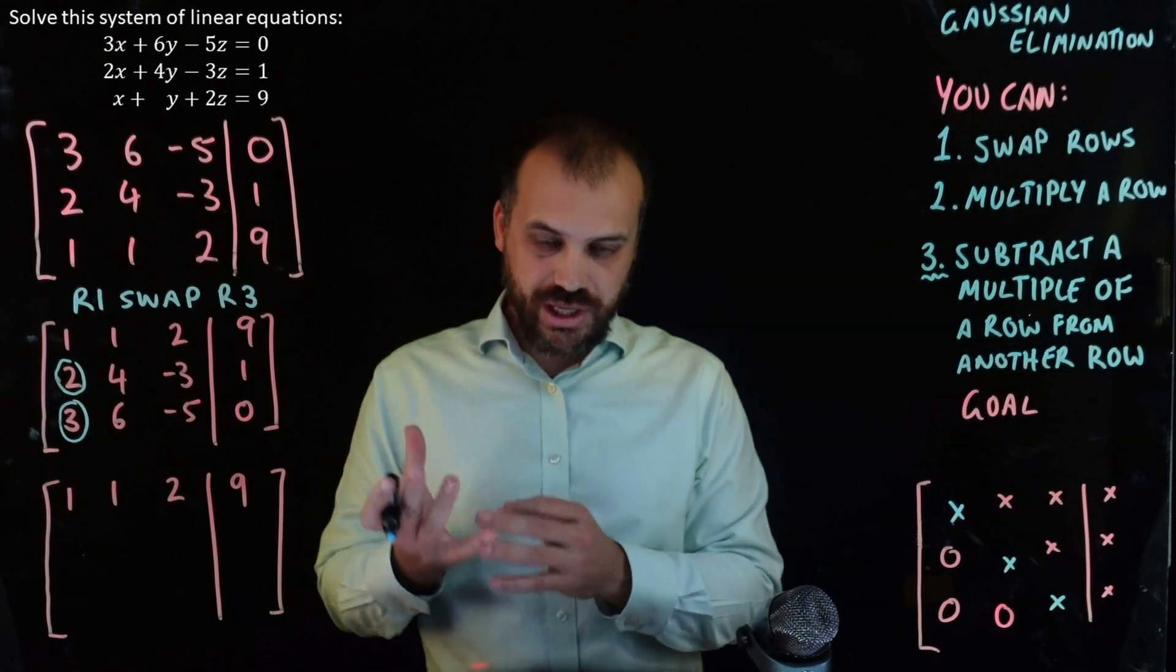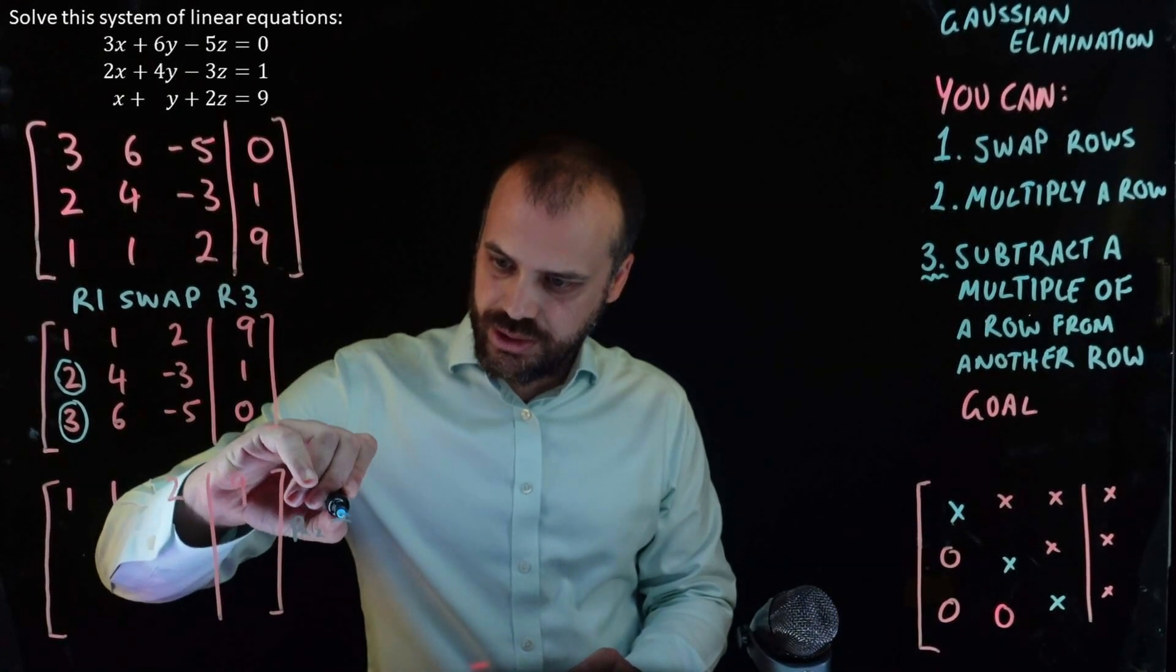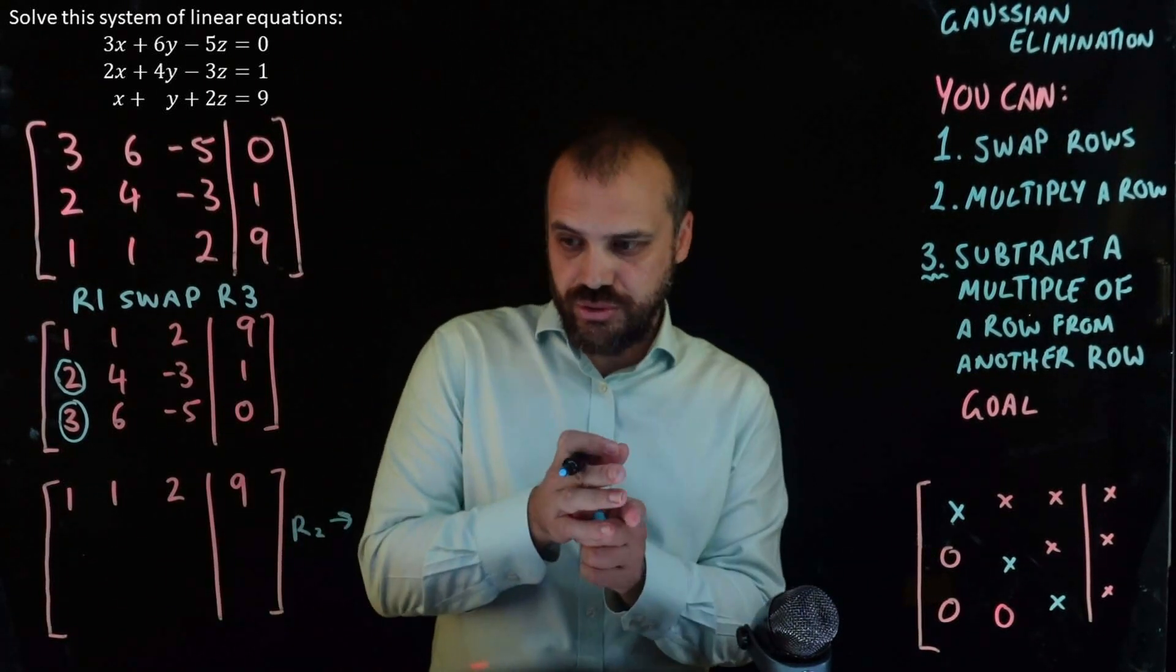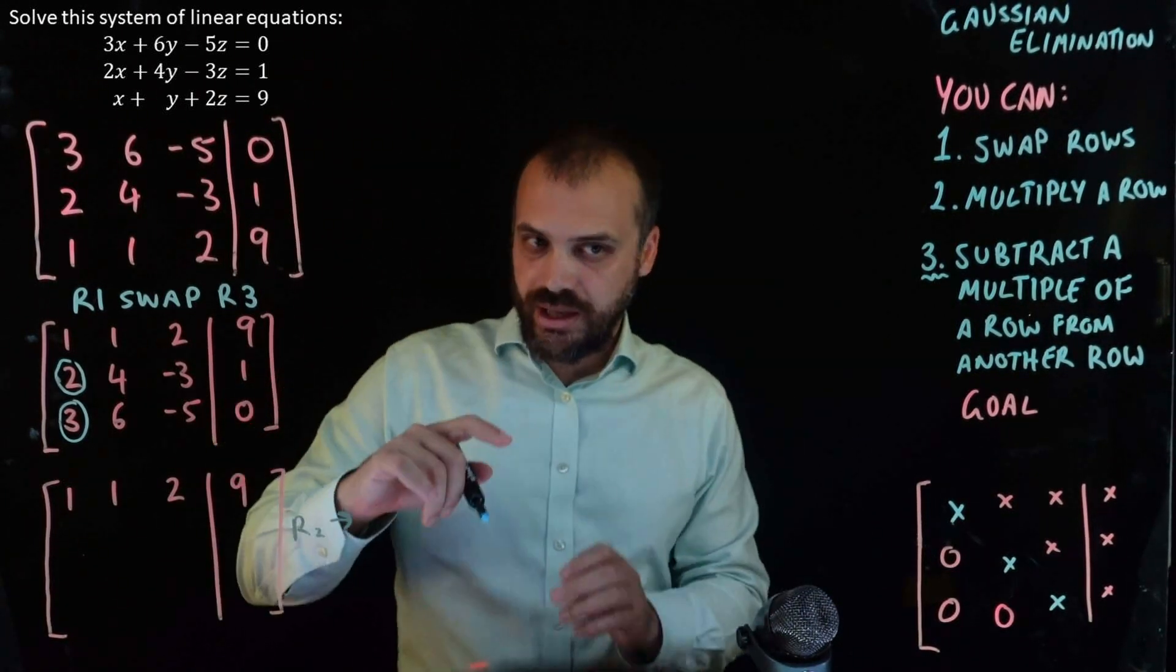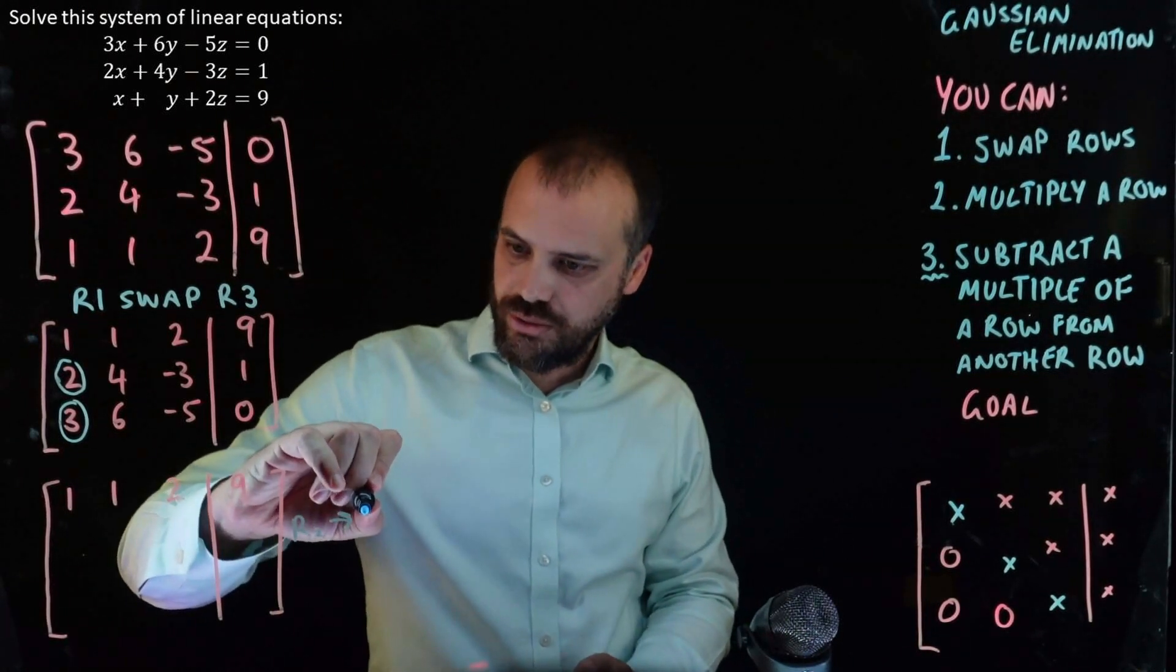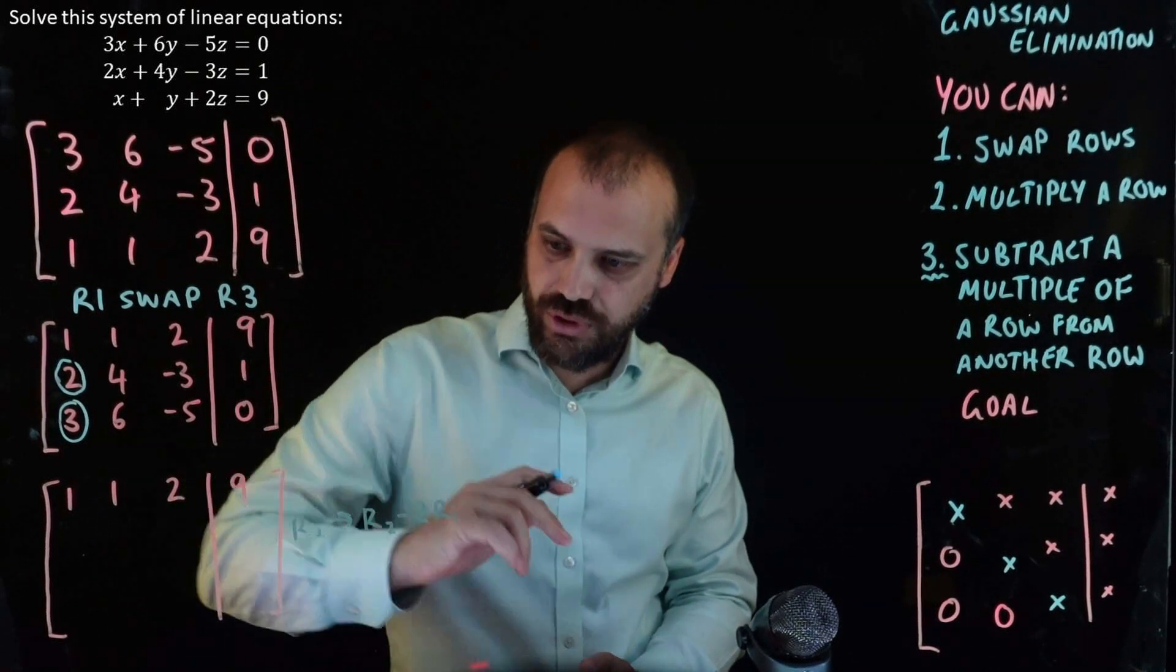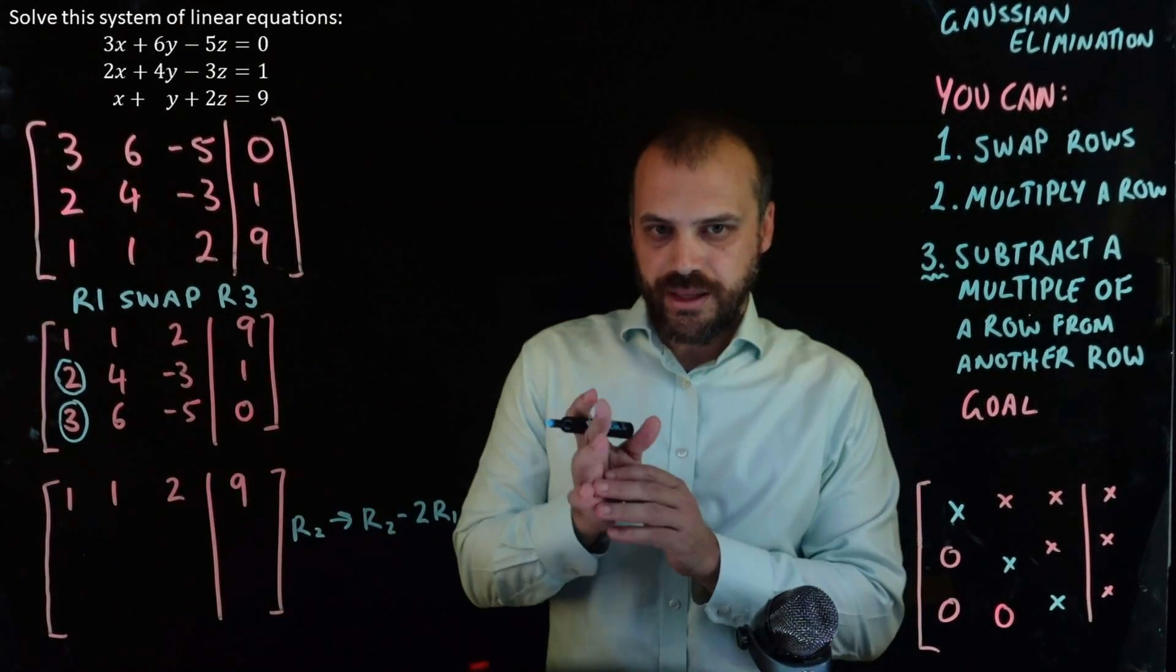Now, there's a particular kind of notation that we use for this, row two, and we're going to turn row two into a new row. And the way that we're creating it is by doing row two minus two times row one.